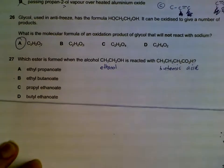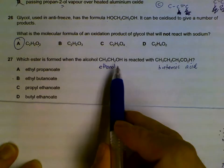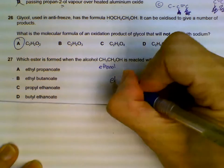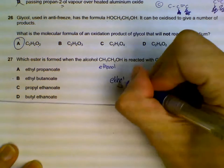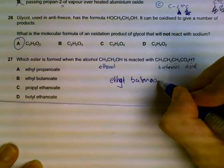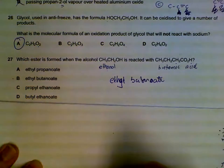Question 27: What ester is formed when we use ethanol and butanoic acid? We name the alcohol first - ethanol gives us ethyl, butanoic acid gives us butanoate, so we have ethyl butanoate.